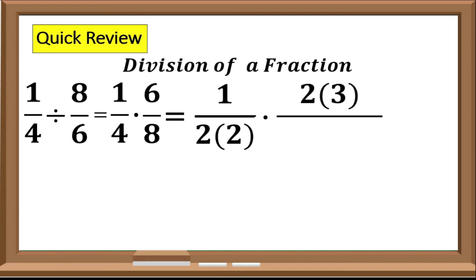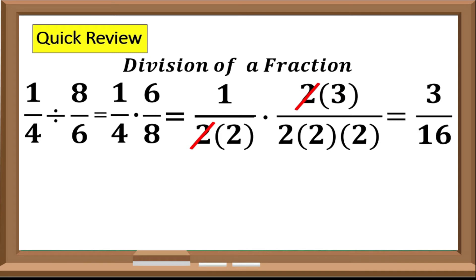For the numerator 6, we have 2 times 3, and for the denominator 8 we have 2 times 2 times 2. Next, divide the common factors that are present in both numerator and denominator — in this case we have 2. Multiply the remaining factors: 1 times 3 equals 3, and for the denominator 2 times 2 times 2 times 2 equals 16. Therefore, 1/4 divided by 8 over 6 equals 3 over 16.